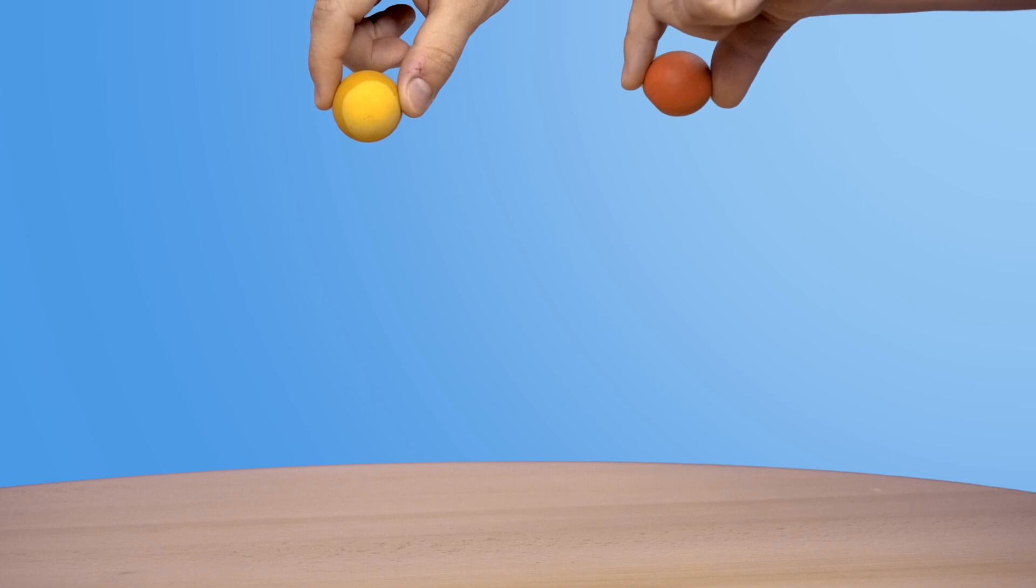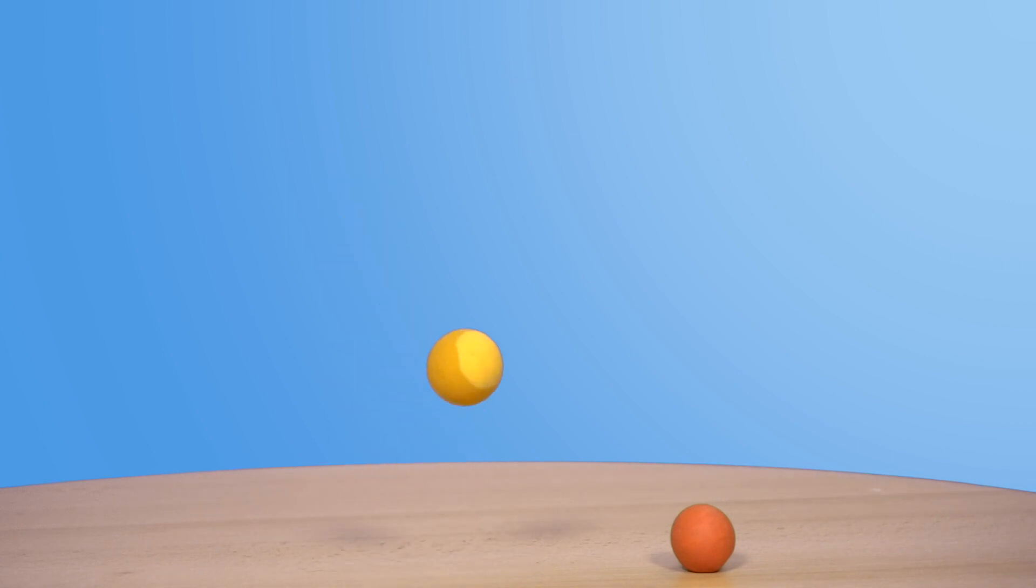The rubber ball exhibits elastic behavior. It will return to its original state and jump back up. The putty will react in an inelastic or plastic manner. The deformation will persist and it will remain on the ground.